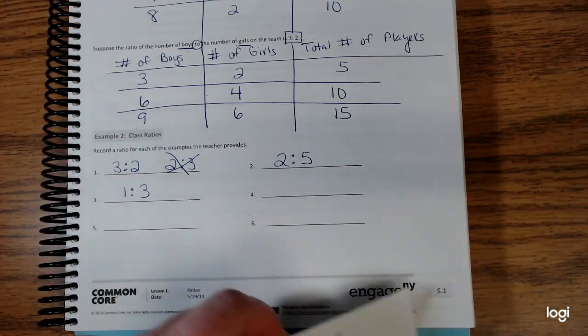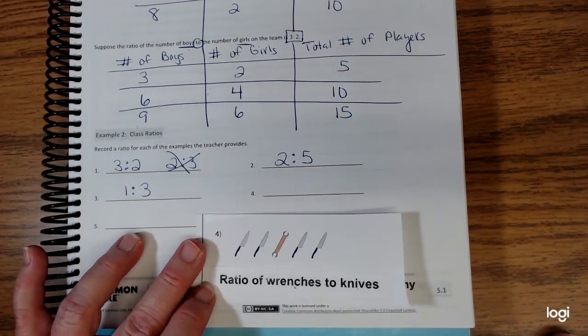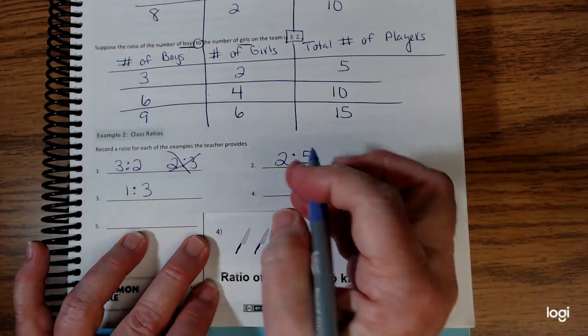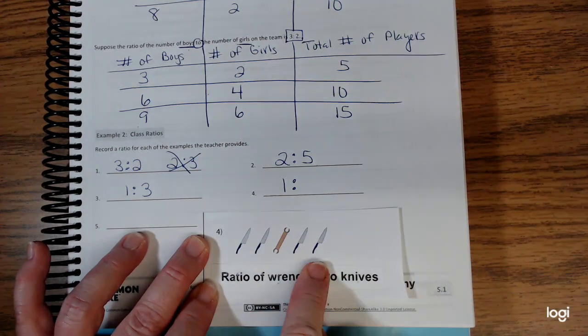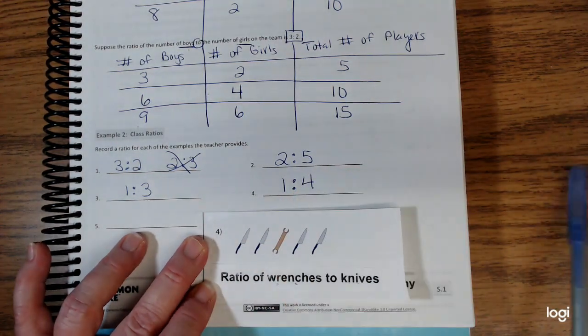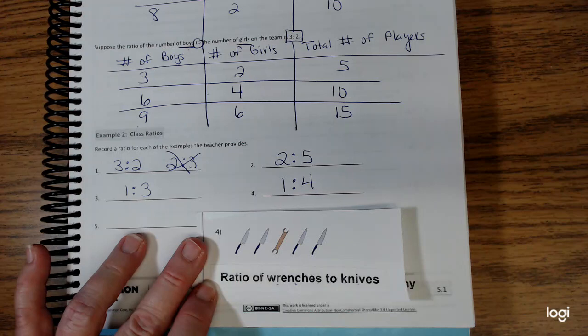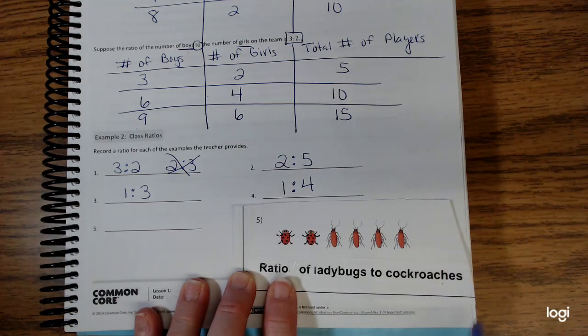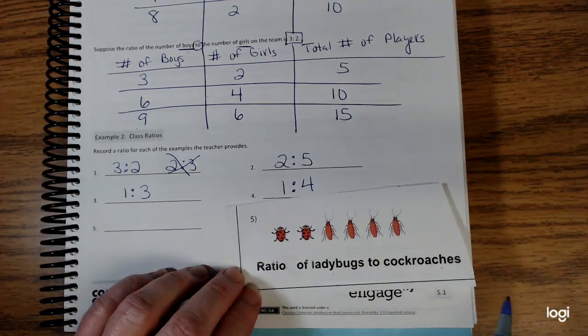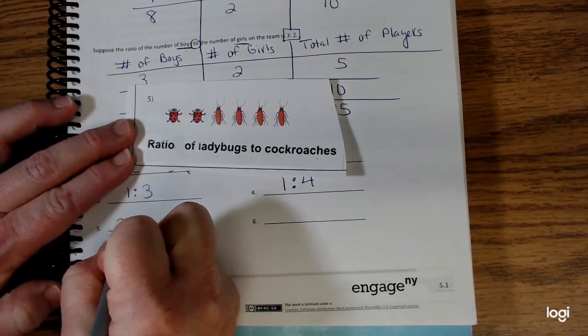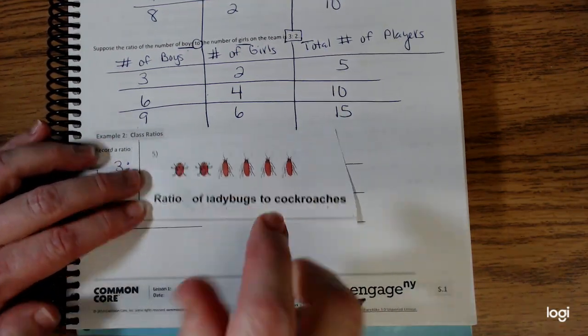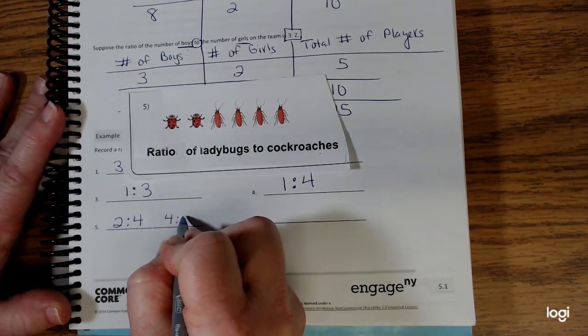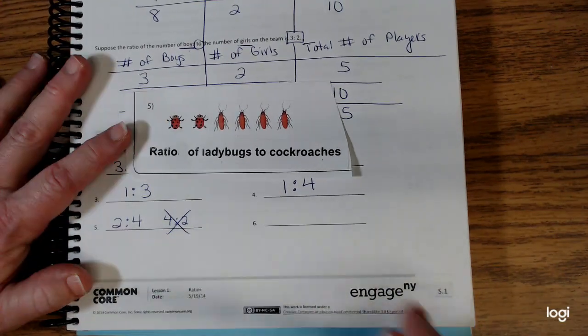Number four: the ratio of wrenches to knives. The first word is wrenches, it looks like there's one, and the number of knives are four, so 1 to 4. Problem number five: the ratio of ladybugs to cockroaches. Ladybugs is first, looks like there's two, and then cockroaches, so 2 to 4. Now remember, if I would have put 4 to 2, that would have been wrong because I did not put them in the correct order.